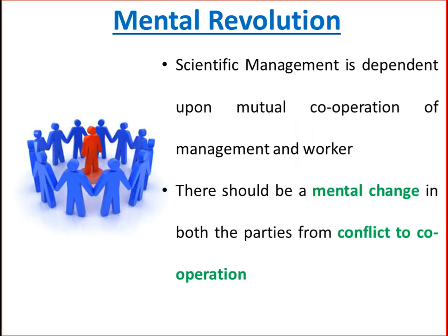The last element of scientific management is mental revolution. It suggests that scientific management is dependent on mutual cooperation of management and workers, and there should be a mental change in both parties from conflict to cooperation. This is the most important feature of scientific management because in its absence, no principles of scientific management can be applied.